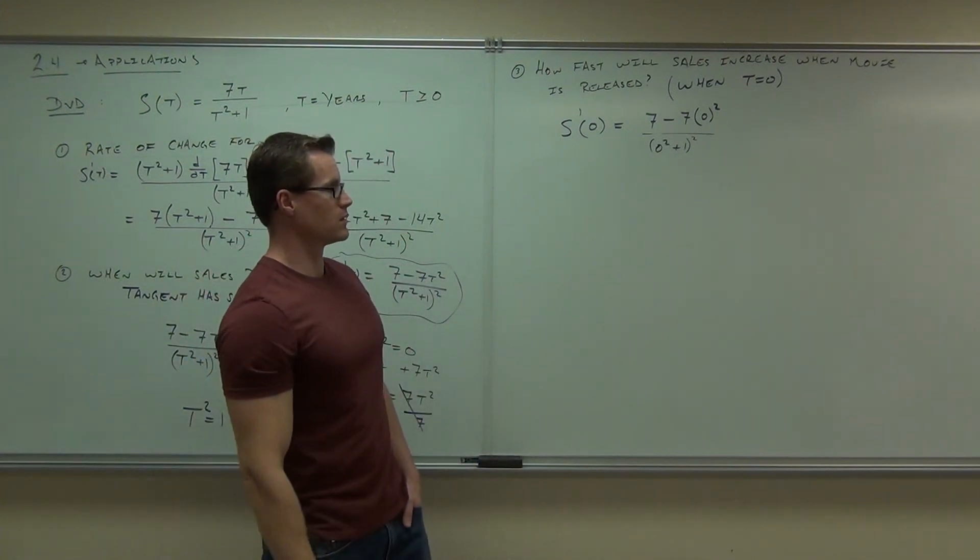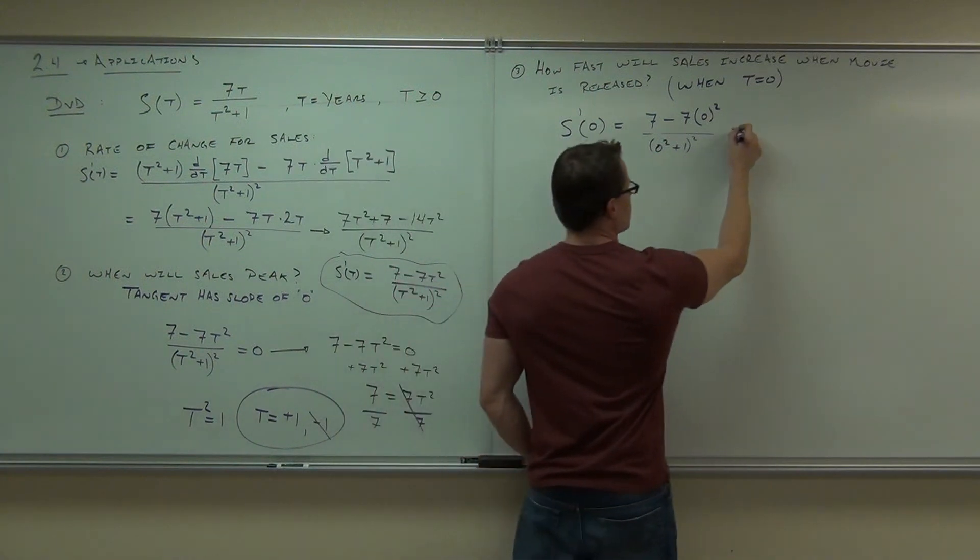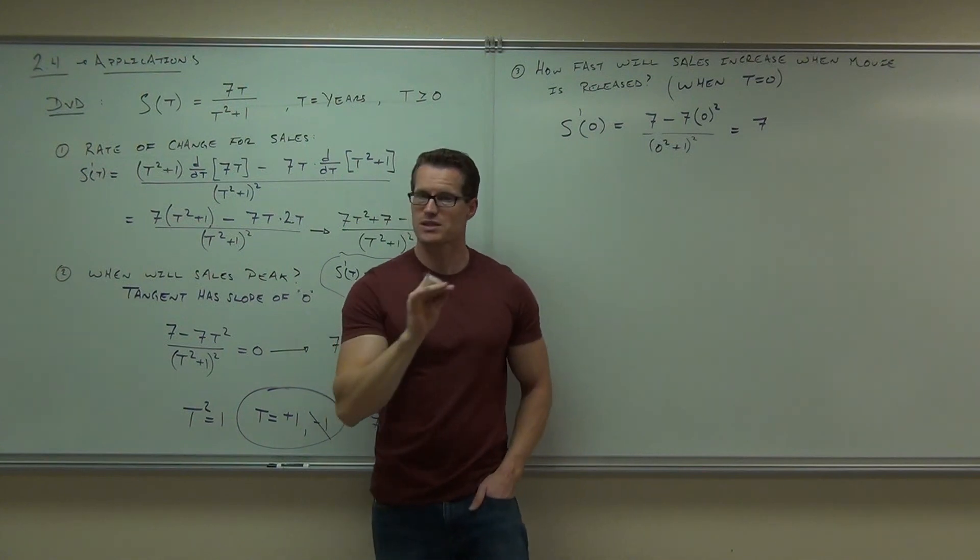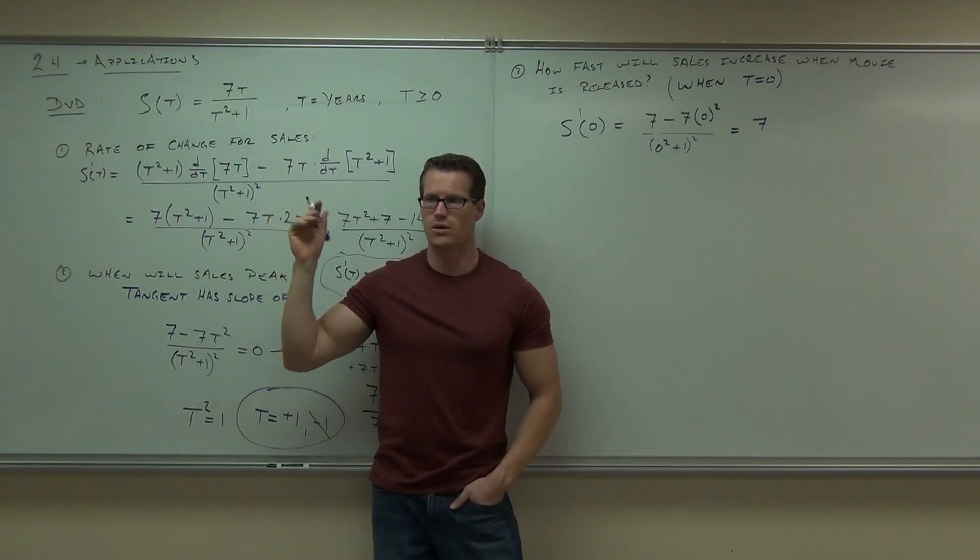7 or negative 7? So it's climbing. It says positive 7. And what I'm guessing is this probably is in millions of DVD sales per year. So at this time, their rate is you're increasing at 7 million DVD sales per year. Now is that a constant? No. This is not linear. So in the next moment of time, it's going to be a little bit different.